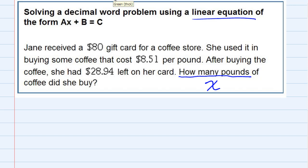Jane started out with an $80 gift card, but then she spent some of it buying coffee that was $8.51 per pound. After buying the coffee, she had $28.94 left. Since she started with $80, I'm going to write that first. Then, since she spent some, we're going to subtract.